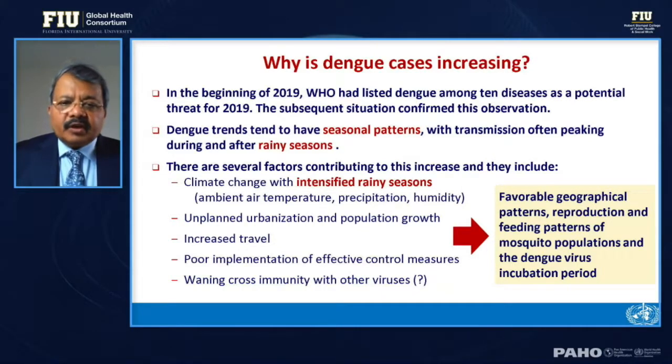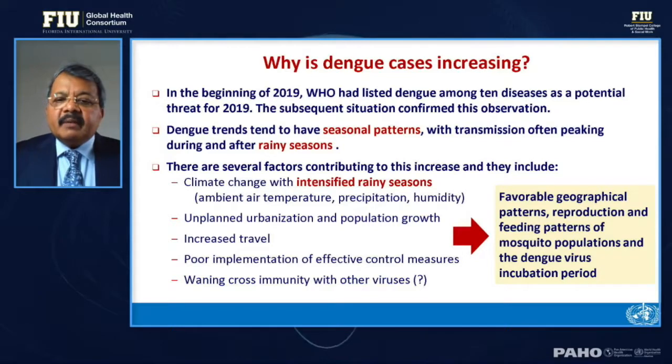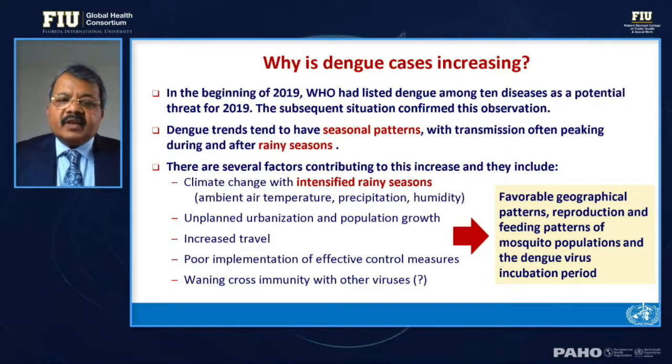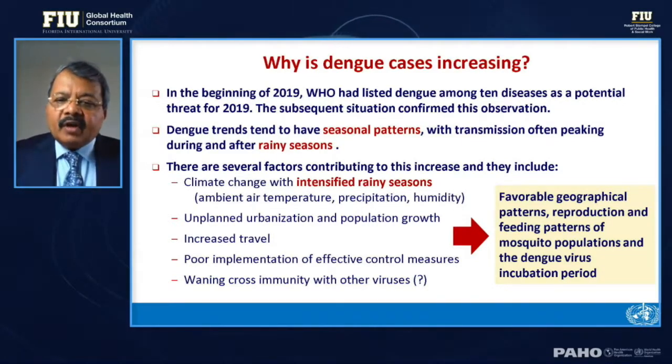The geographic distribution is shocking — mosquitoes have silently expanded to over 150 countries and we are not keeping abreast with vector surveillance. Their reproduction and feeding patterns have all helped in their growth and transmission of dengue.